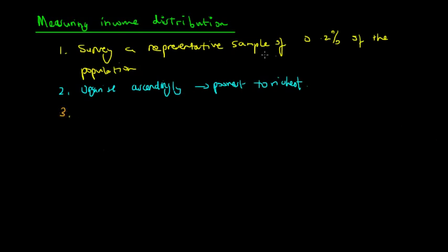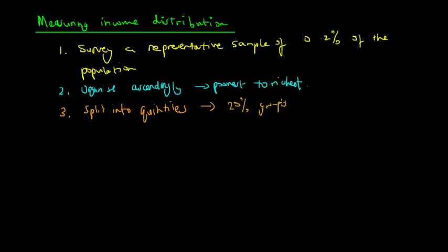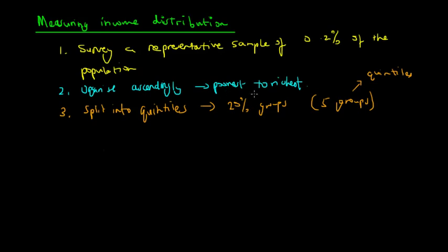Thirdly, after organizing the distribution of income ascendingly from poorest to richest, they split the data into quintiles — grouping the population into 20% groups. Overall there will be five groups, which economists call quintiles. The prefix 'quint' meaning five, so there are five 20% groups arranged as blocks ascending from the poorest to the richest, making up 100% of all income recipients.